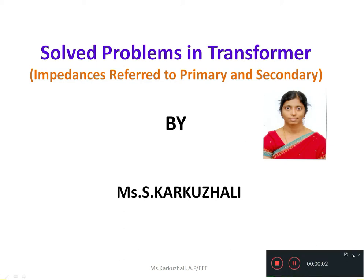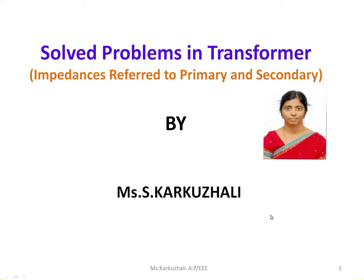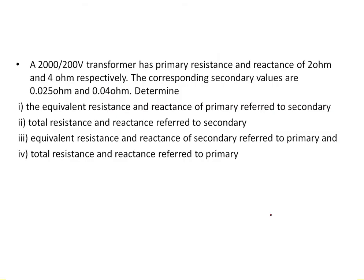Good morning students. Today we will discuss problems based on impedances referred to primary and secondary. The problem given: a 2200 volt transformer has primary resistance R1 of 2 ohm, and reactance X1 is also given. The corresponding secondary values R2 and X2 are also given.